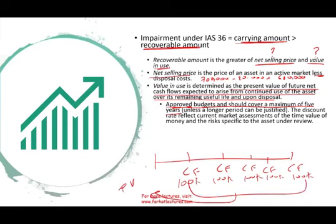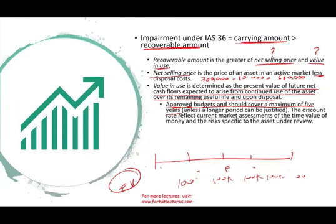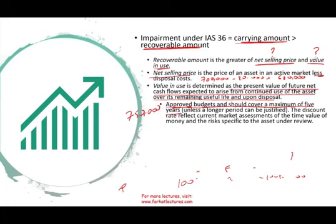Under IFRS, you have to use approved budgets covering a maximum of five years, discounting cash flows to present value. You should generally use five years into the future unless you can justify a longer period. The discount rate should reflect your current market assessment and the nature of the asset under review — if the asset is risky, it may justify a higher interest rate. The recoverable amount is whichever is greater between net selling price and value in use.